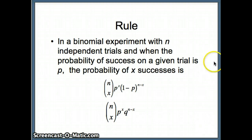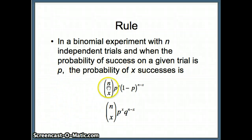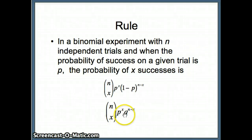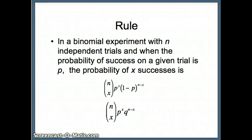Here's our rule. In independent trials where the probability of success is p, the probability of x successes is determined by n choose x times p to the x times (1 minus p) to the (n minus x). I replace 1 minus p with q, where p is the probability of success, q is the probability of failure, n is the number of trials, and x is the number of winners. We want x winners with probability p each, and n minus x failures with probability q each.